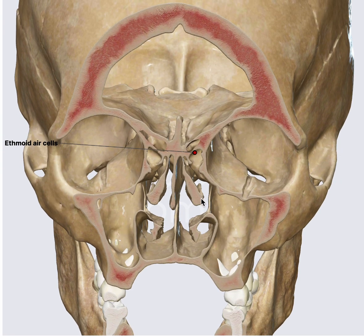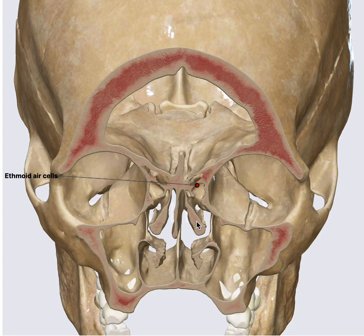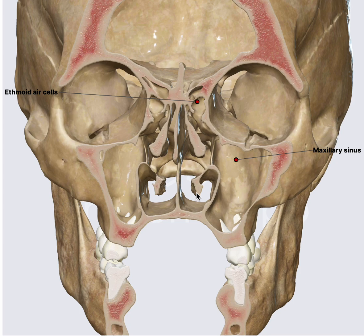This is the middle turbinate and obviously this will be the middle meatus — that's our second pass. And then the small projection you can see here is the superior turbinate. As we go higher, the bone thickness decreases. The inferior turbinate is the strongest of all.